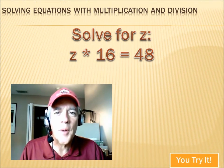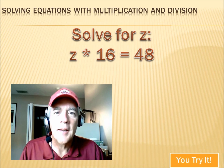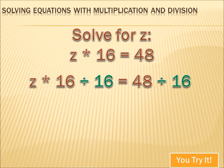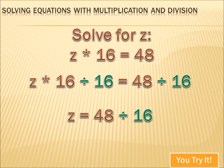Try this one — hit the pause button, do the problem, and then hit your forward key. We've got Z times 16 equals 48, and we're trying to solve for Z. The first thing we have to do is get rid of the times 16 to isolate Z. We do the inverse operation — the opposite of multiplying by 16 is dividing by 16. We divide both sides by 16. The two 16s cancel out, leaving Z equals 48 divided by 16. Z equals 3.